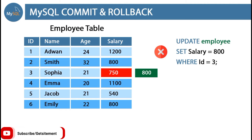Now we have two solutions. We can run the same update command to fix this problem, or we can run the ROLLBACK command. Suppose you mistakenly ran an INSERT command and need to resolve it — simply type ROLLBACK and semicolon to end the line. It will revert our execution.